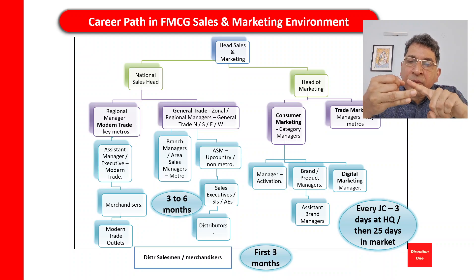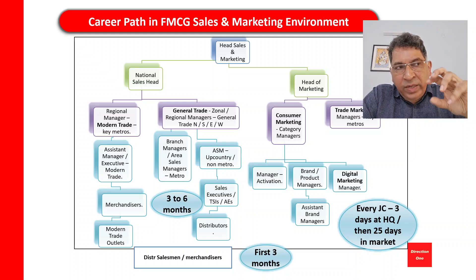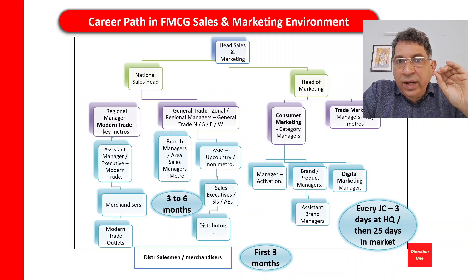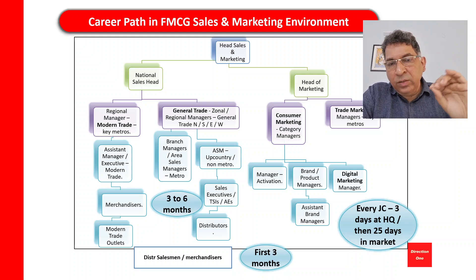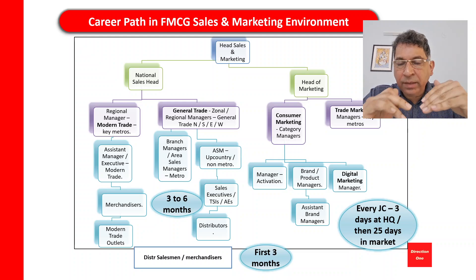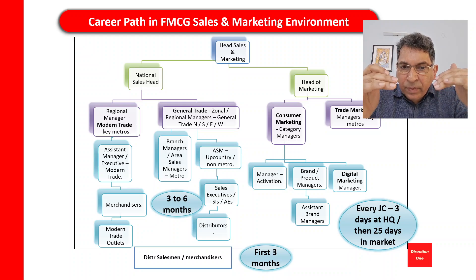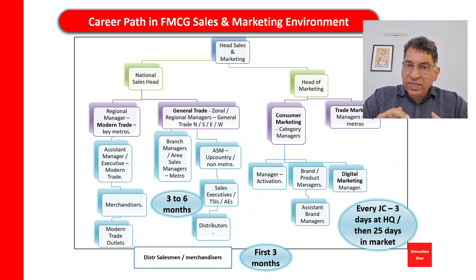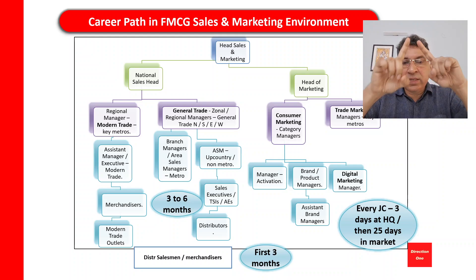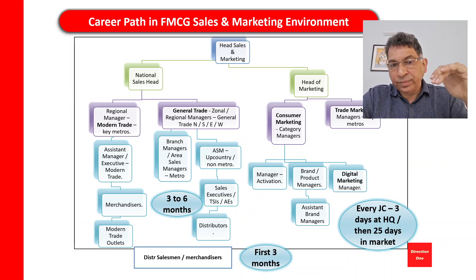The individual contributor role is called a sales trainee, territory sales executive, or TSI — don't get dazzled by the terminology. This is the level at which a tier 2 or tier 3 marketing person is likely to join. This role handles distributors in the market. These distributors have distributor sales representatives — DSRs or DSMs — who go into the market, make calls, take orders, and the distributor supplies the product to the retailer. That's how the entire general trade structure works.